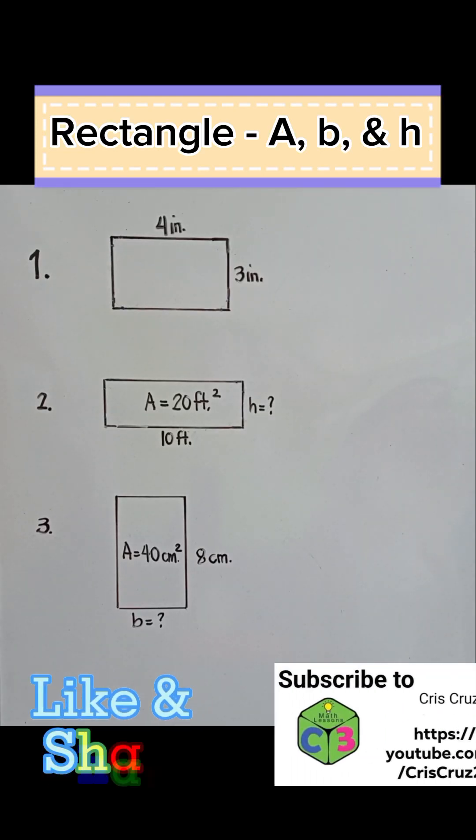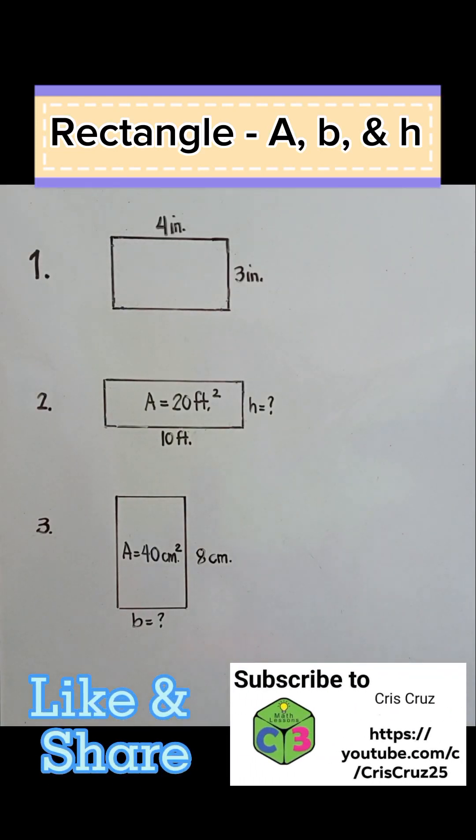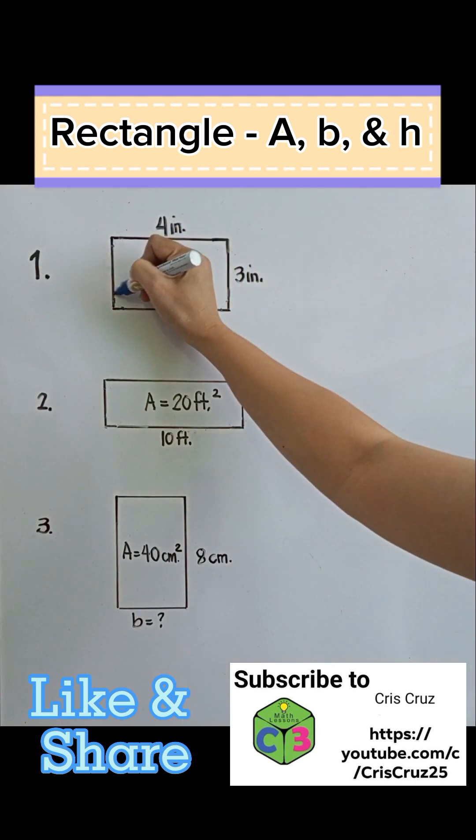Today, we are going to solve problems regarding area of a rectangle. To make sure that the figure is a rectangle, there should be a 90-degree symbol in each corner like this.